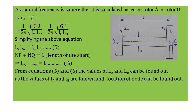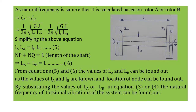From Equations 5 and 6, the values of La and Lb can be found, since Ia and Ib are known, and the location of the node can be determined. By substituting the values of La or Lb into Equation 3 or 4, the natural frequency of torsional vibrations of the system can be found.